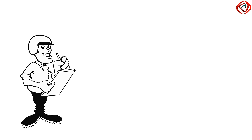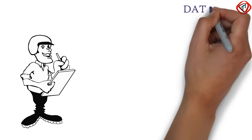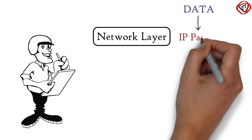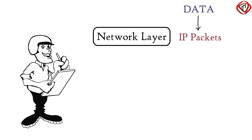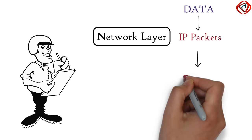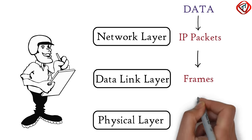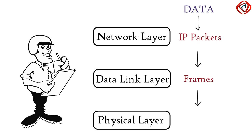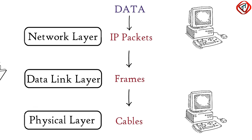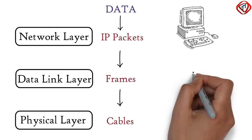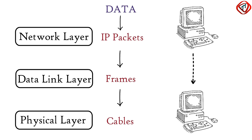Please note: the data in the network layer is in the form of IP packets. IP packets are packed into frames in the data link layer. The physical layer then transmits the frames into the transmission media. So in a computer network, data moves from one computer to another in the form of frames.